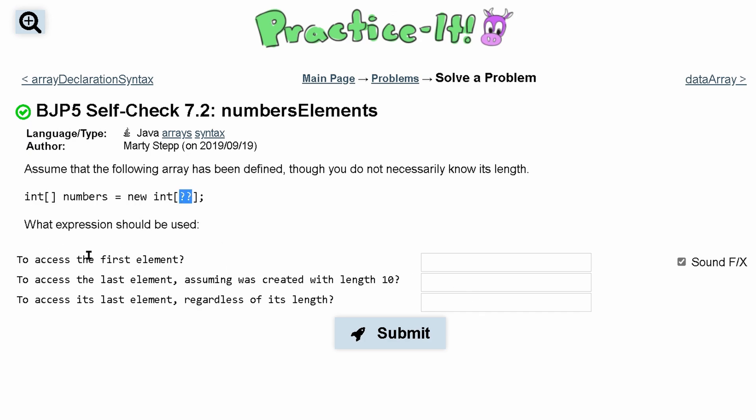We're asked what expression should be used for each of them. Which expression should be used to access the first element? Well this is relatively simple. If we want to access the first element we just use the name numbers and then we get the zeroth index. So zeroth index gets the first element.